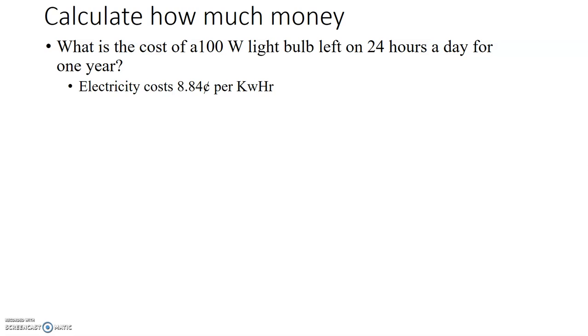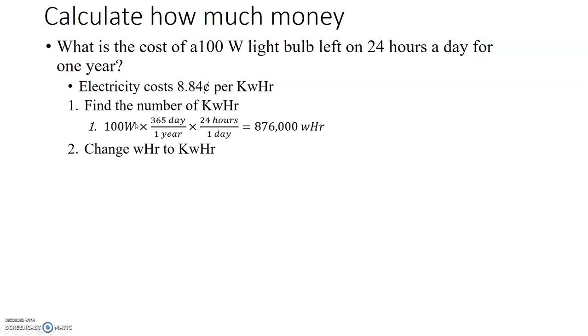Now how do we calculate how much money? What's the cost of a 100 watt light bulb left on 24 hours a day for one year at the cost of 8.84 cents per kilowatt hour? First, we need to figure out how many kilowatt hours there is. We take our 100 watts and multiply that by how many hours is in a year. So 365 days times 24 hours, that gives me 876,000 watt hours. Now we need to change that wattage to kilowatts, so we divide by a thousand. That becomes 876 kilowatt hours.